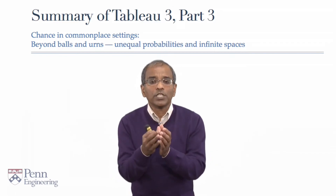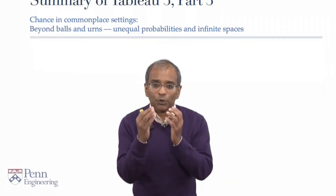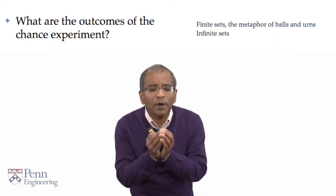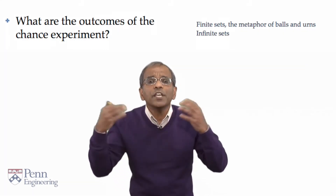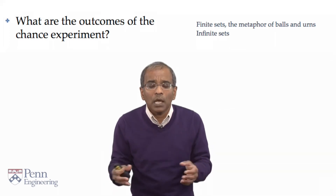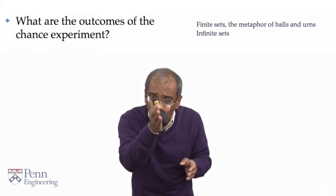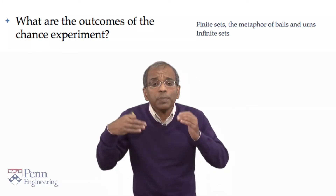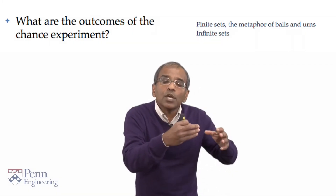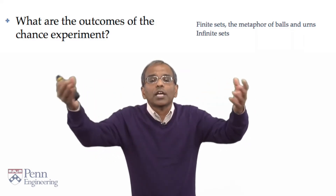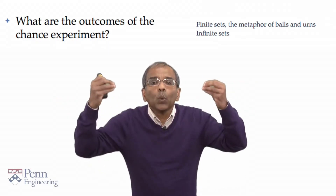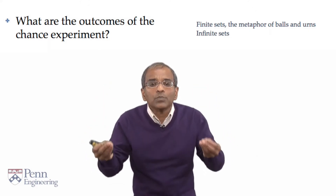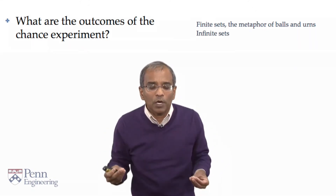The first question in a chance experiment should always be: can I identify the collection of feasible outcomes of the experiment, either explicitly by writing them all down — which you can only do if this is finite — or implicitly, where you see a pattern, and using that pattern you can completely describe a generic outcome. That is always the first question: what are the conceptual outcomes of the underlying chance experiment?